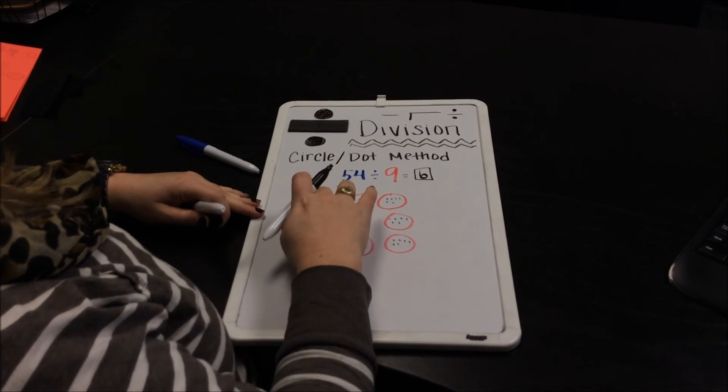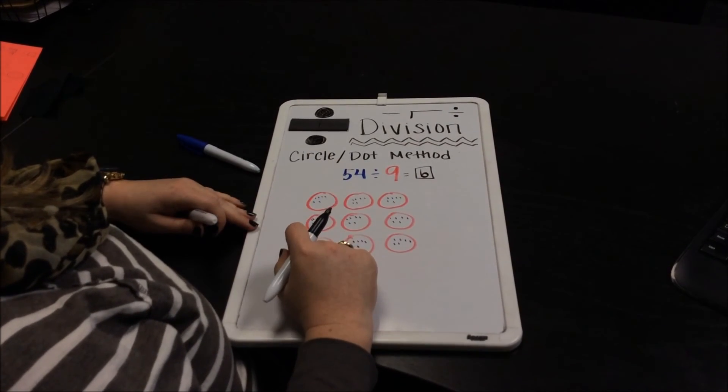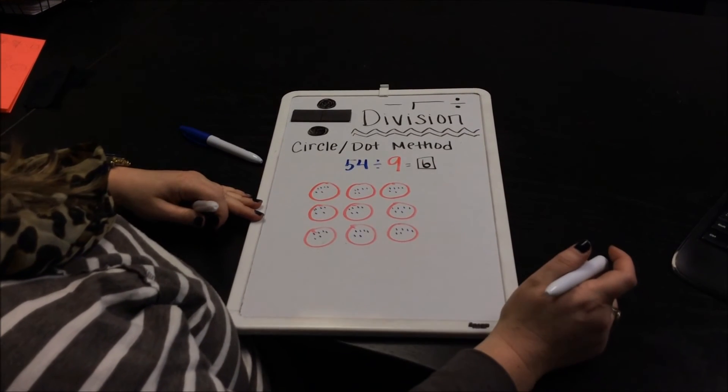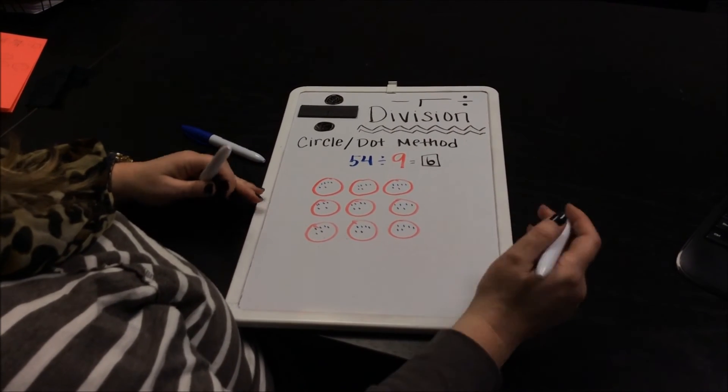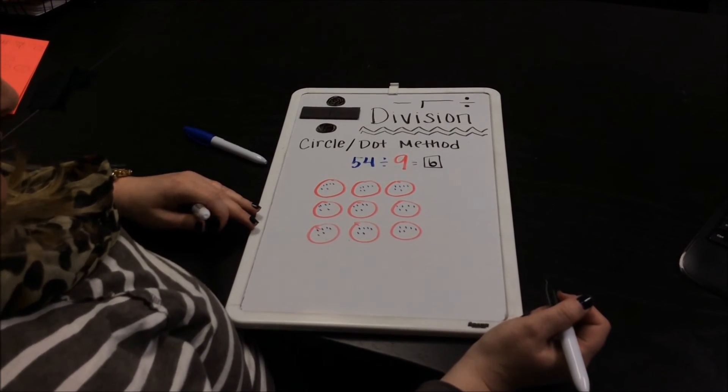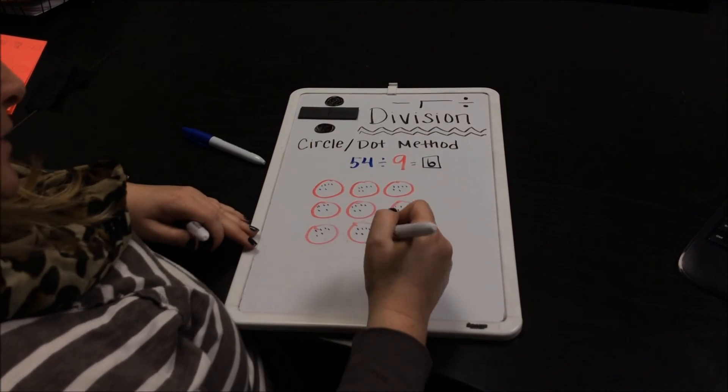However many dots were evenly divided or dispersed or separated evenly in the 9 circles. So again, with division, you can always check your work with multiplication. And I always encourage the kiddos to do that.